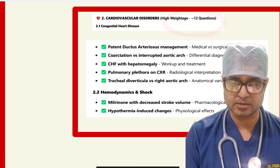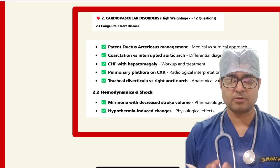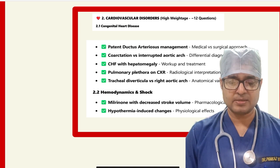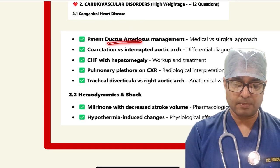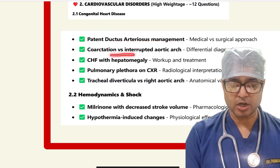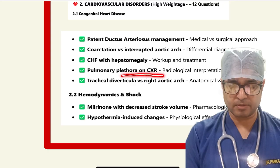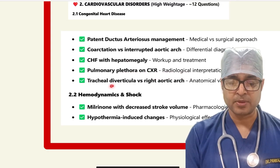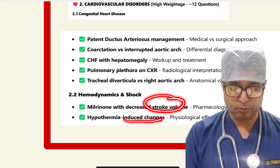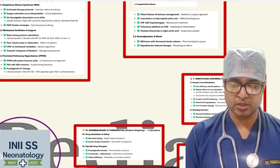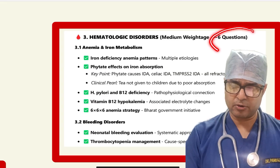Cardiovascular disorders had very high weightage in this exam — higher than previous exams where nephrology dominated. Topics included congenital heart disease like PDA management, coarctation versus interrupted aortic arch, CHF with hepatomegaly, pulmonary plethora on chest X-ray, tracheal diverticulum versus right aortic arch, stroke volume, and hypothermia-induced changes. Neonatal hematology had five to six questions on anemia and iron metabolism.